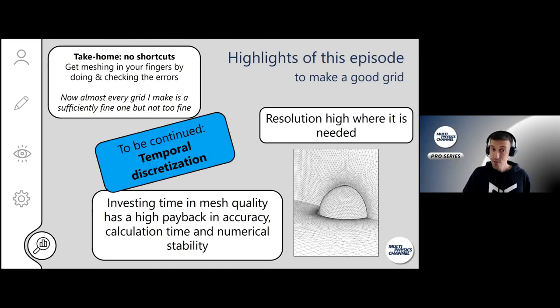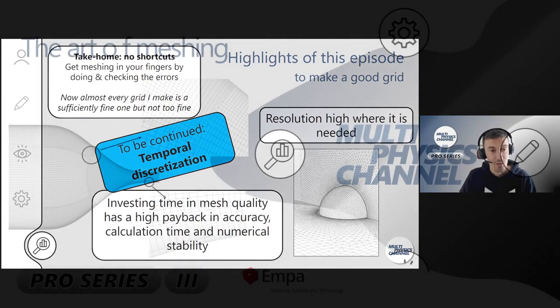So this is for meshing. In one of the next episodes we're not only looking at spatial discretization, making a good mesh, but we're also going to look at how to cut up your simulation if it's a transient one in a good way in time. How to do temporal discretization, which time step should I choose? That's for one of the next episodes of this Pro Series. Thanks a lot for being here. I hope you enjoyed it, and if there are questions I'm open to discuss them with you.